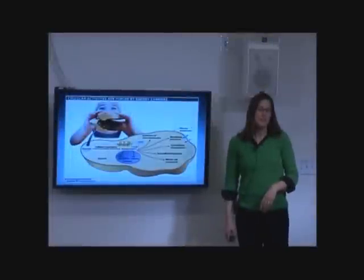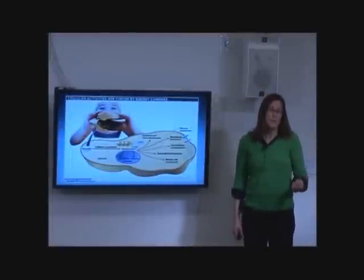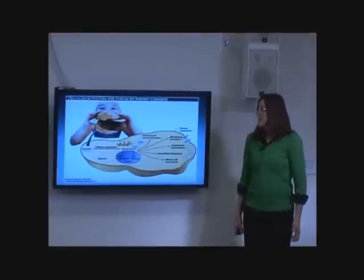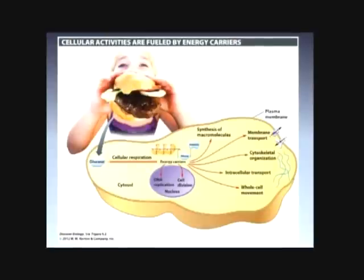Cellular respiration basically takes the food that you eat in your diet, carbohydrates and fats, and converts them into ATP. This figure is an overview of this where you have a mitochondria here that would be within a cell. And what's happening is you're taking glucose and you're making it into ATP.